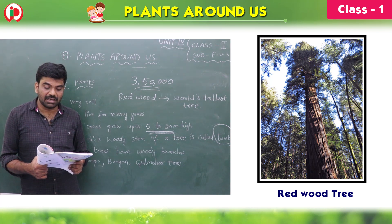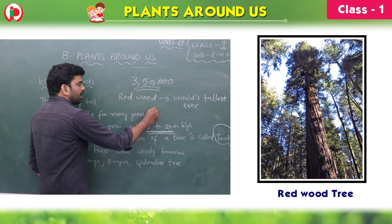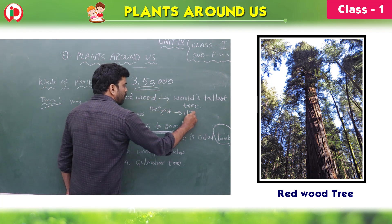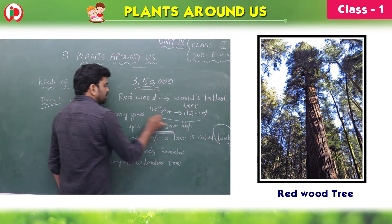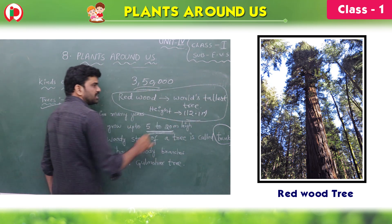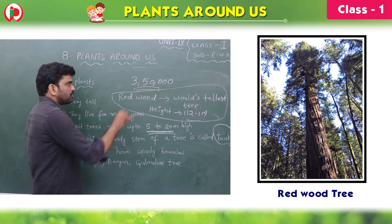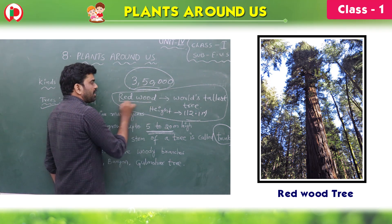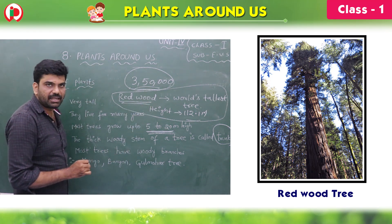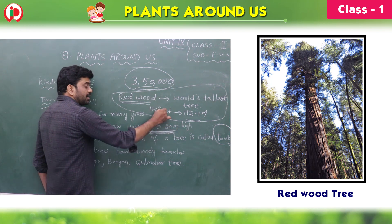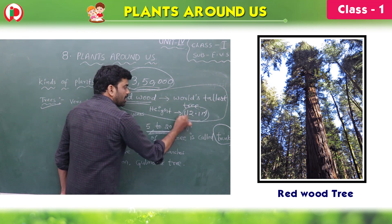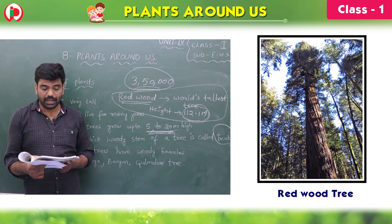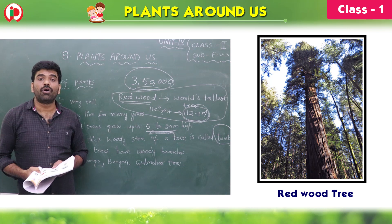What is the height of the redwood? 112.1 meters. This is a very interesting thing. We know 3 lakh 50,000 plants; the average tree height is just 5 to 20 meters, but the redwood is 112.1 meters — such a big and tall tree! And some trees have no branches also.